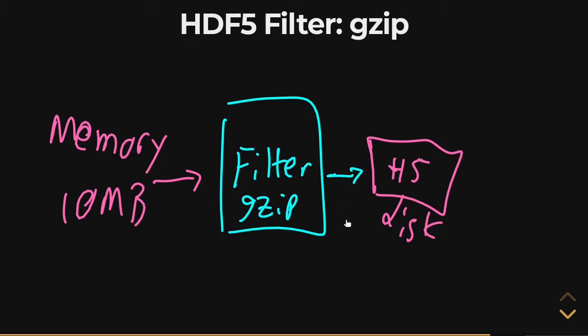That's important because when you go to read the data again, you'll be doing the same thing. You'll be reading it from disk, then expanding it backwards, running it through the GZIP filter the other way. So it decompresses that data, and out comes your 10 megabytes back into memory exactly as you stored it.